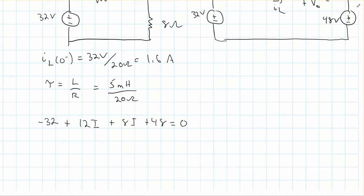So we have negative 32 plus 12I plus 8I plus 48 equals 0. And then just solving this, you would get I final. I'm not going to solve that for you. You can solve that.